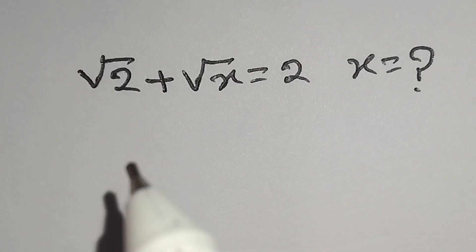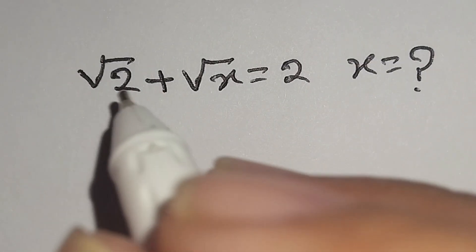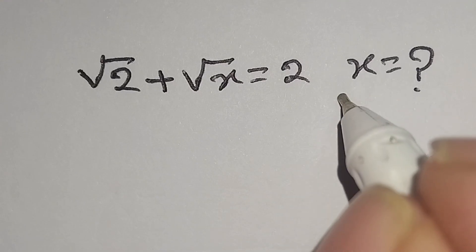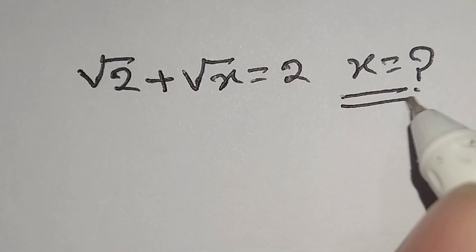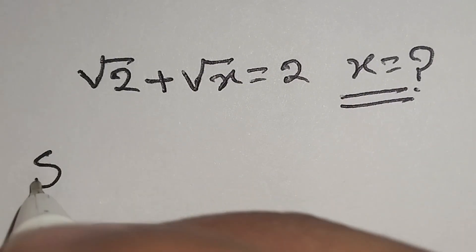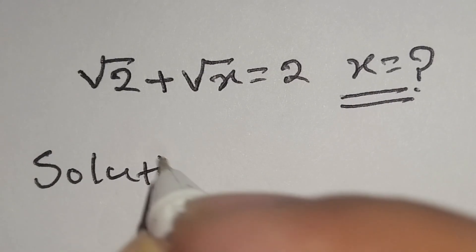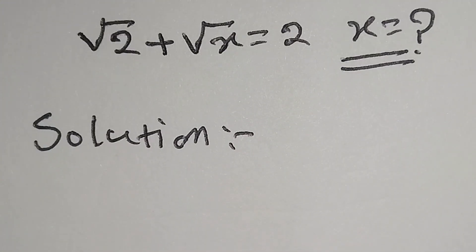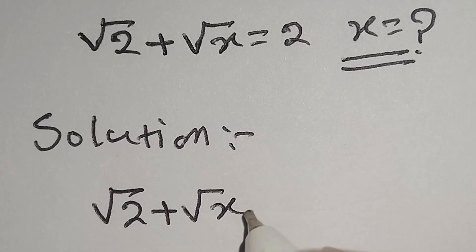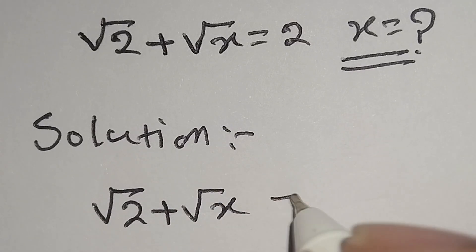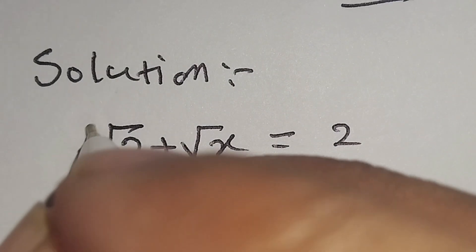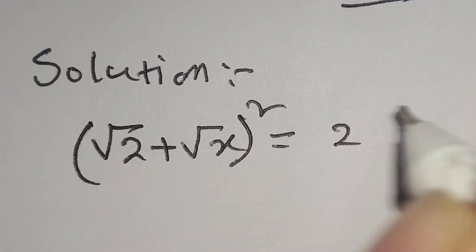Hello everyone, this is a nice math problem. Square root of 2 plus square root of x is equal to 2, and we have to find the value of x. So let's start the solution. The given equation is square root of 2 plus square root of x is equal to 2. Now we'll square both sides.